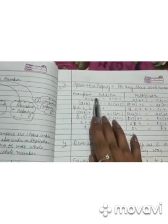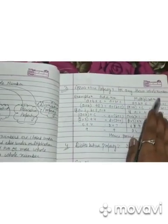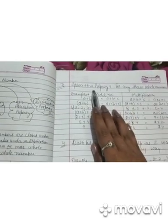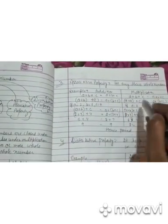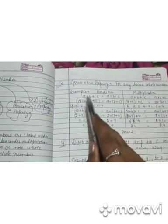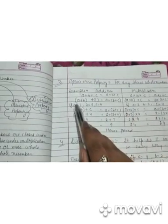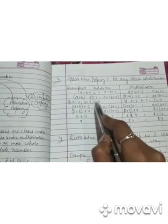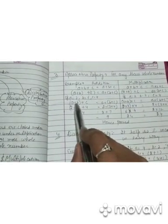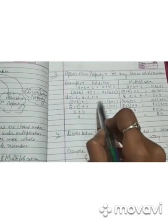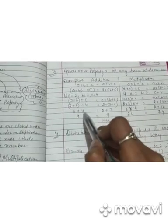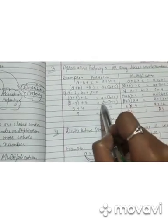Next is associative property for any 3 whole numbers. Addition: (a + b) + c = a + (b + c). जो first two whole numbers हैं उनको अलग कर लेंगे, और third को अलग। If a = 2, b = 3, c = 4: (2 + 3) + 4 = 5 + 4 = 9. And 2 + (3 + 4) = 2 + 7 = 9. Hence proved.